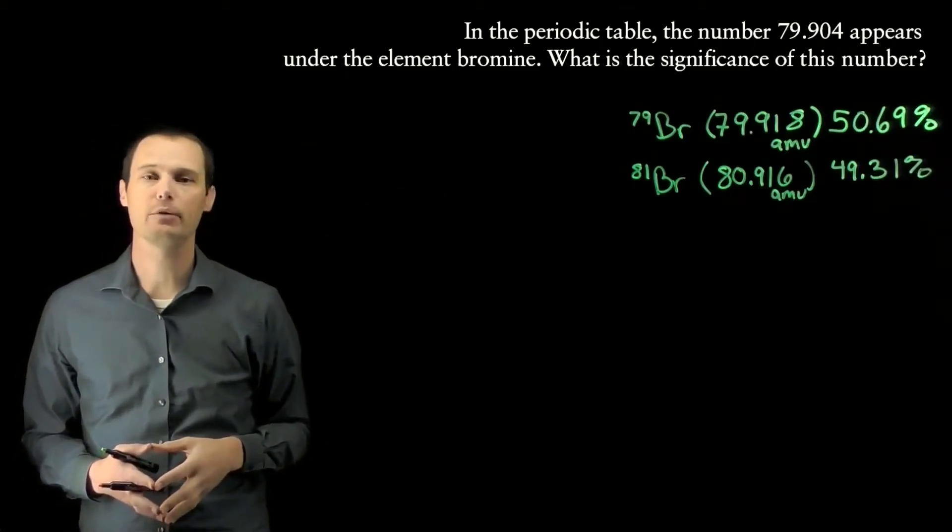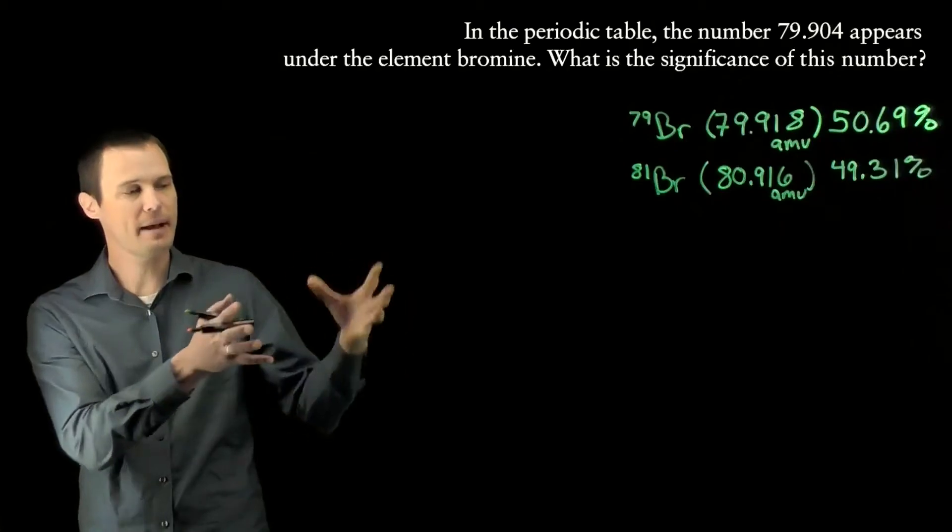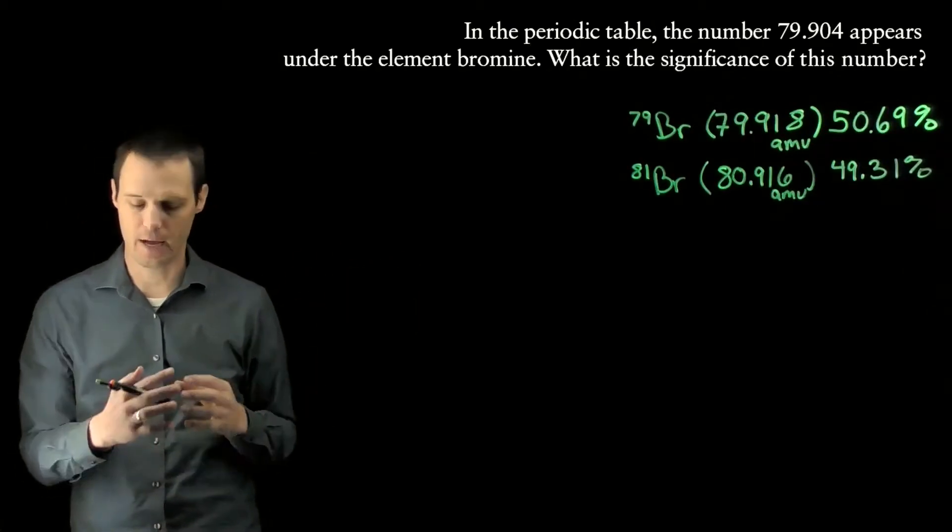None of them would have the mass of 79.904, but on average, if you take that scoop of bromine, the average mass of an average bromine atom is 79.904. How do we calculate that?